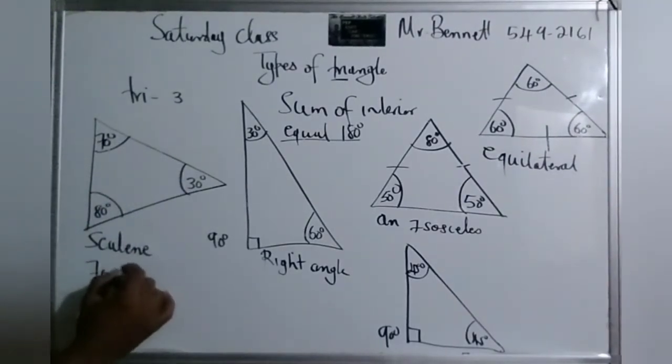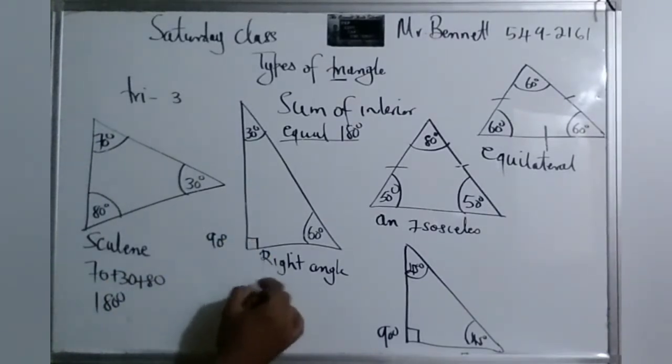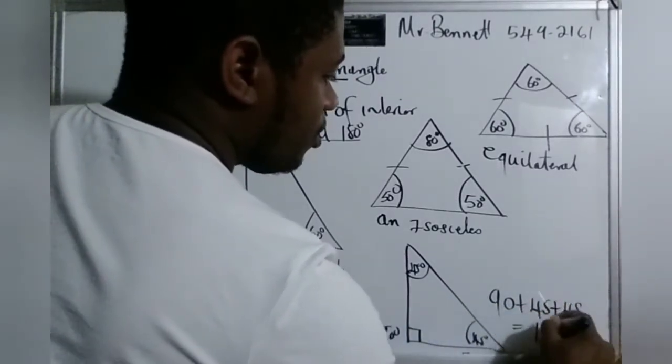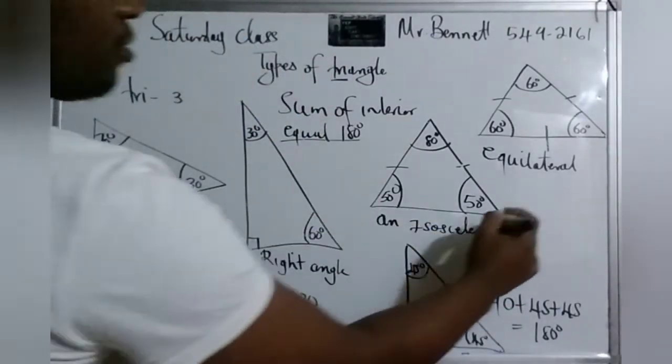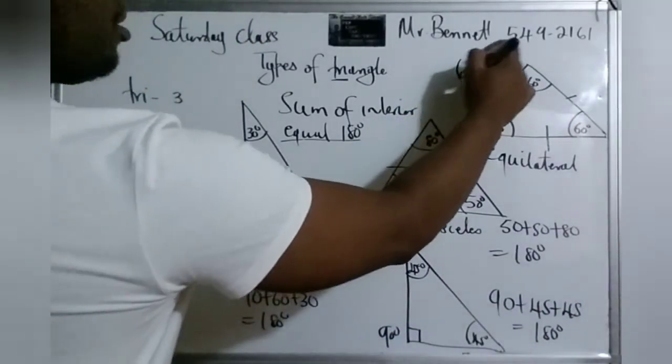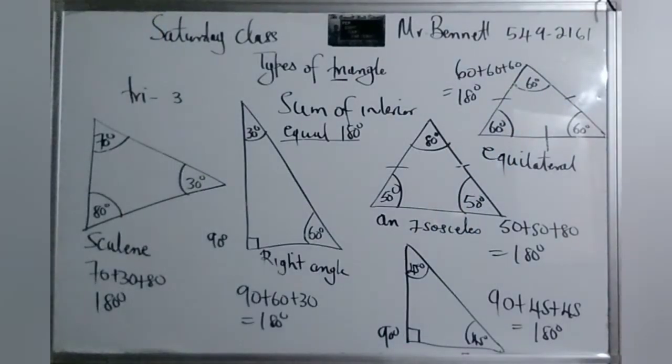So let me just write that. Sum of the interior equals 180 degrees. So it doesn't matter what type of triangle is this. This is common to all triangles. When you add interior angles, you get 180 degrees. Let's look at this one. 70 plus 30 plus 80 is equal to 180 degrees. Similarly, this is 90, so 90 plus 60 plus 30 equals 180 degrees. And similar to this, 90 plus 45 plus 45 equals 180 degrees. So 180 degrees is common to all triangles, the sum of the interior angles. So when you add up all the angles, you must get 180 degrees.